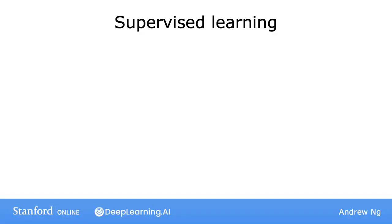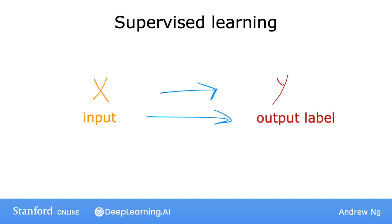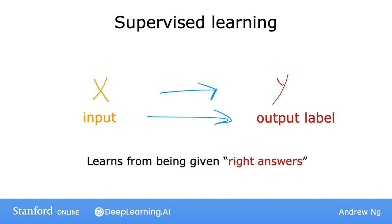Let's take a look at what that means. Supervised machine learning, or more commonly supervised learning, refers to algorithms that learn x to y, or input to output mappings. The key characteristic of supervised learning is that you give your learning algorithm examples to learn from that include the right answers, where by right answer I mean the correct label y for a given input x.